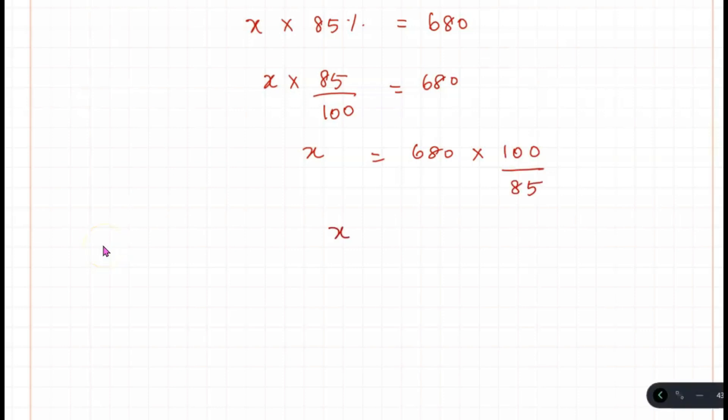So simplifying this, X equals 680 times 100 divided by 85. Working through the calculation: 4 times 17 equals 68, and continuing the arithmetic step by step gives us 800.